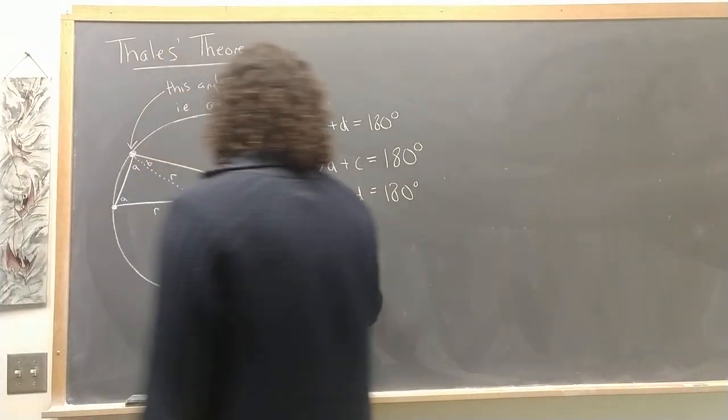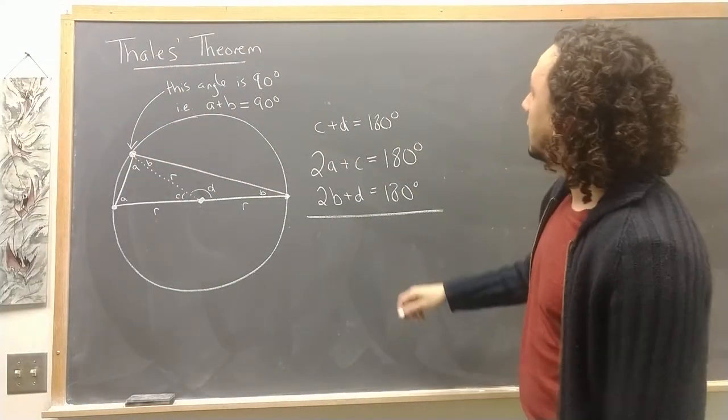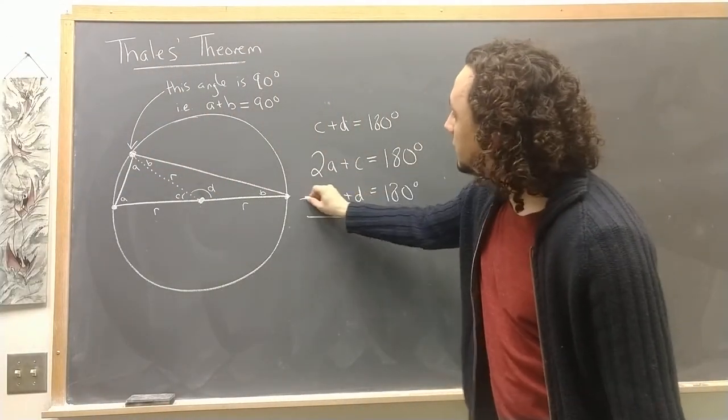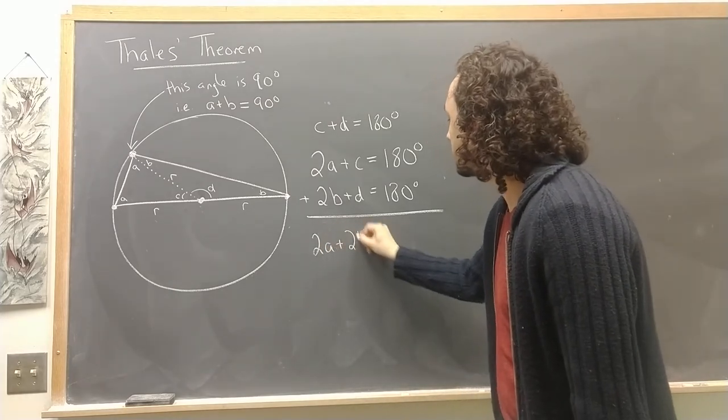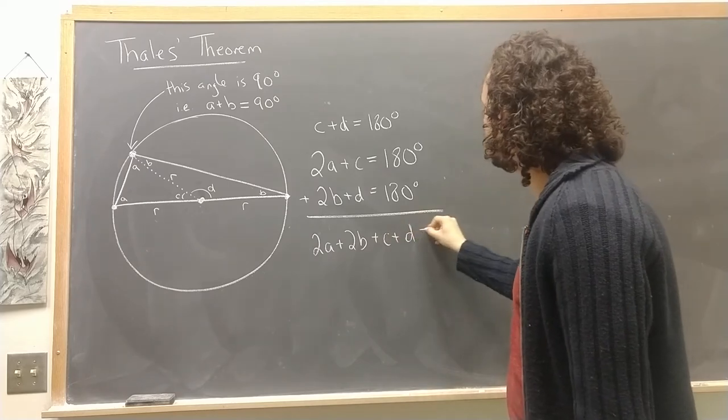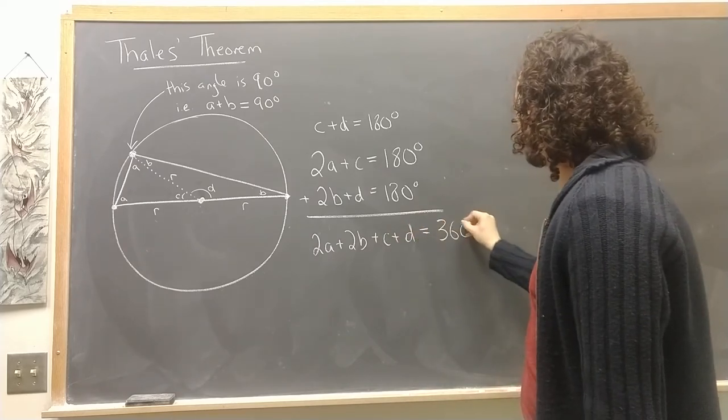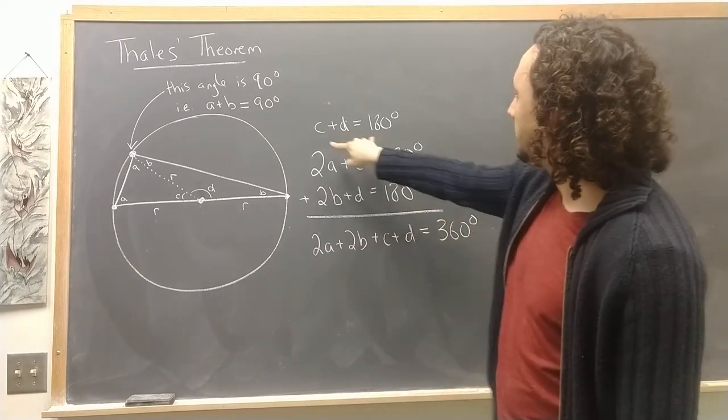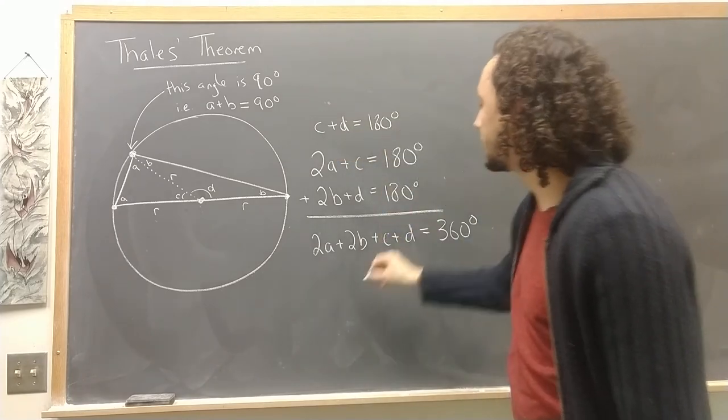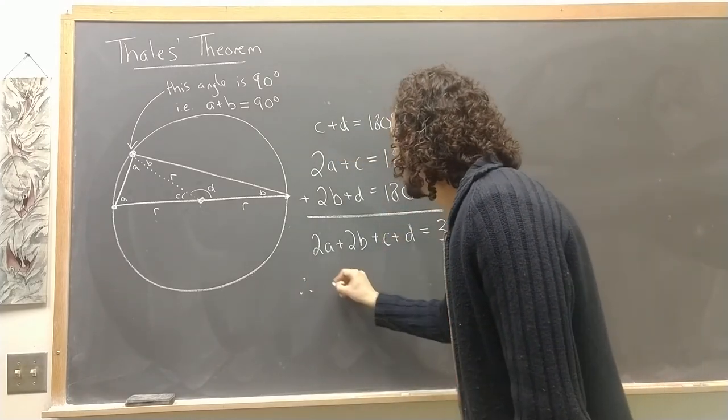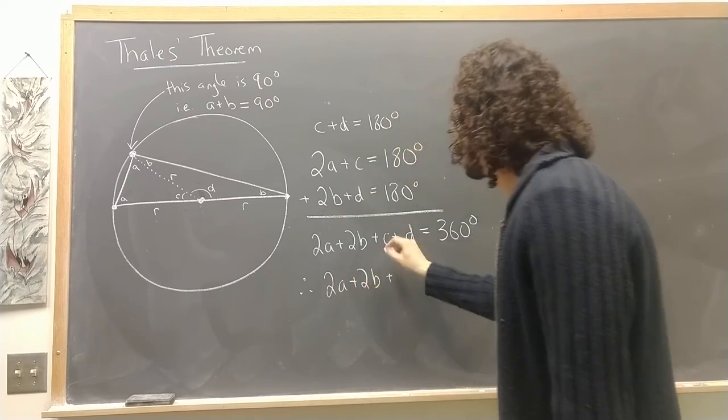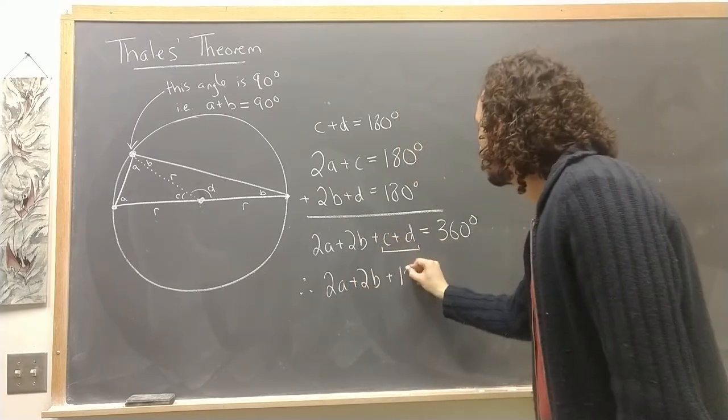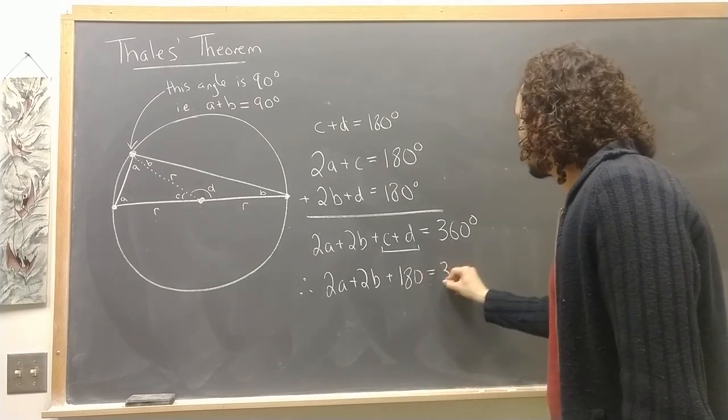Now, if I put this together, if I add these two, what I get is 2A plus 2B plus C plus D equals 360. But I know that C plus D equals 180, so from this it follows that 2A plus 2B plus C plus D, which is 180, equals 360.